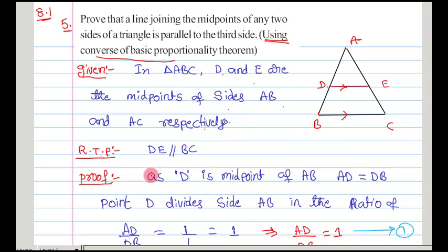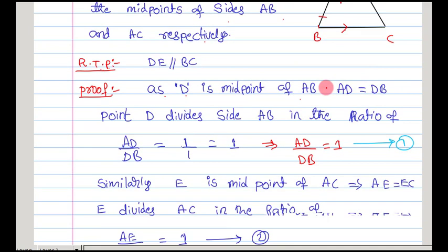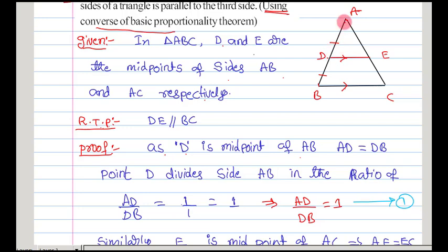Since D is the midpoint of AB, we can write that AD is equal to DB, and point D divides side AB in the 1 is to 1 ratio. I am supposing this as equation 1.